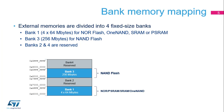The external memory space is divided into fixed-size banks of 256 MB each. Two external memory banks are dedicated to the FMC: Bank 1 is connected to the NOR or PSRAM controller, and Bank 3 is connected to the NAND controller. Banks 2 and 4 are reserved.